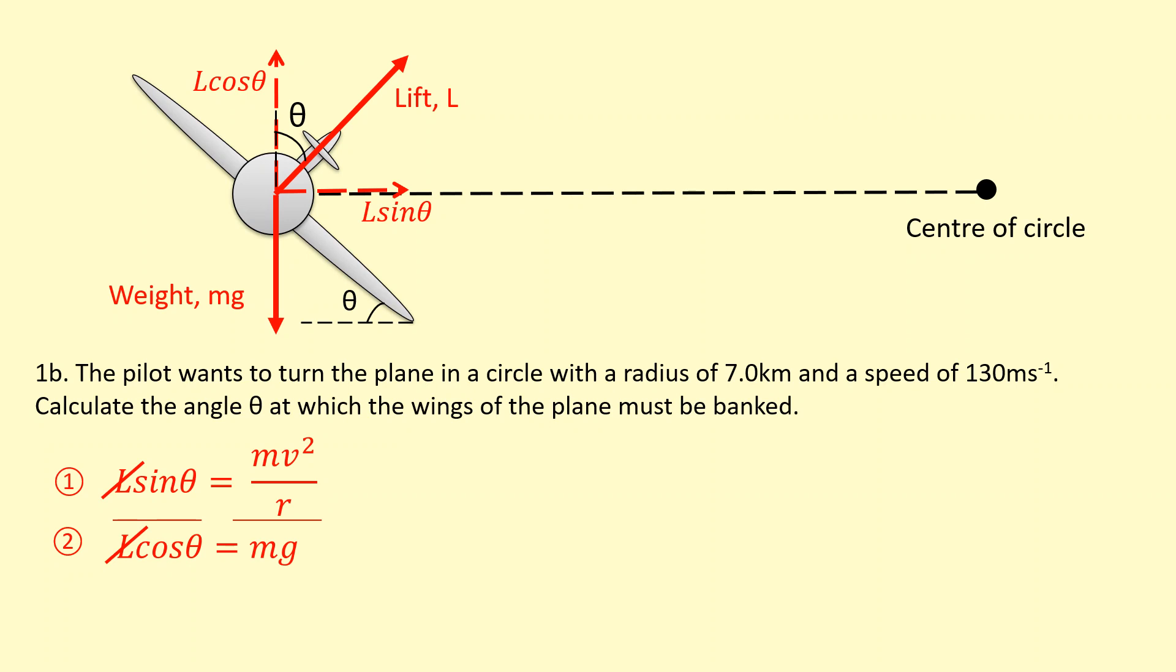So we just get v² over rg. So we get this equation here: tan θ equals v² over rg.